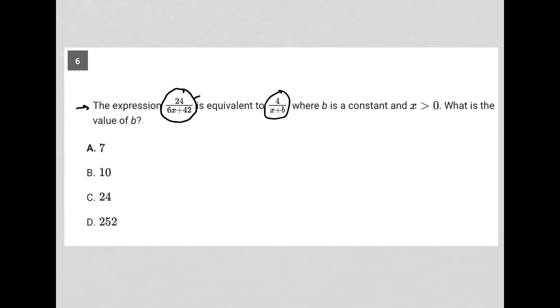Well, I can take a look at the comparison between these two things, and I can see that the numerator here, and I'll just rewrite it here so we can see it together. 24 over 6x plus 42. It says it's equivalent to, so I'm going to write equals 4 over x plus b.